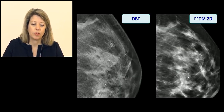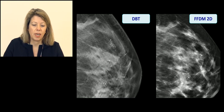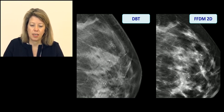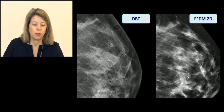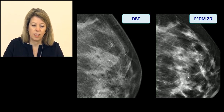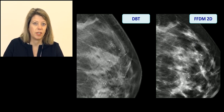Here is an example of a microcalcification cluster with DBT and full-field 2D mammography. This is a benign cluster with a cystic one with a linear shape. These calcifications look brighter on tomosynthesis compared with 2D mammography. The shape is a little less defined on DBT, but due to higher contrast, calcification clusters are more visible.